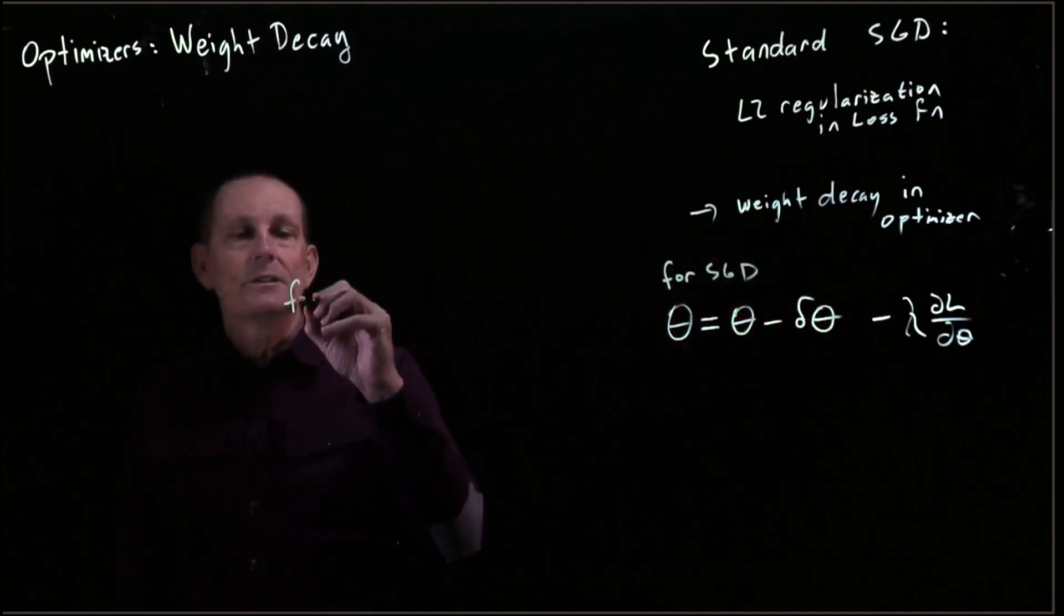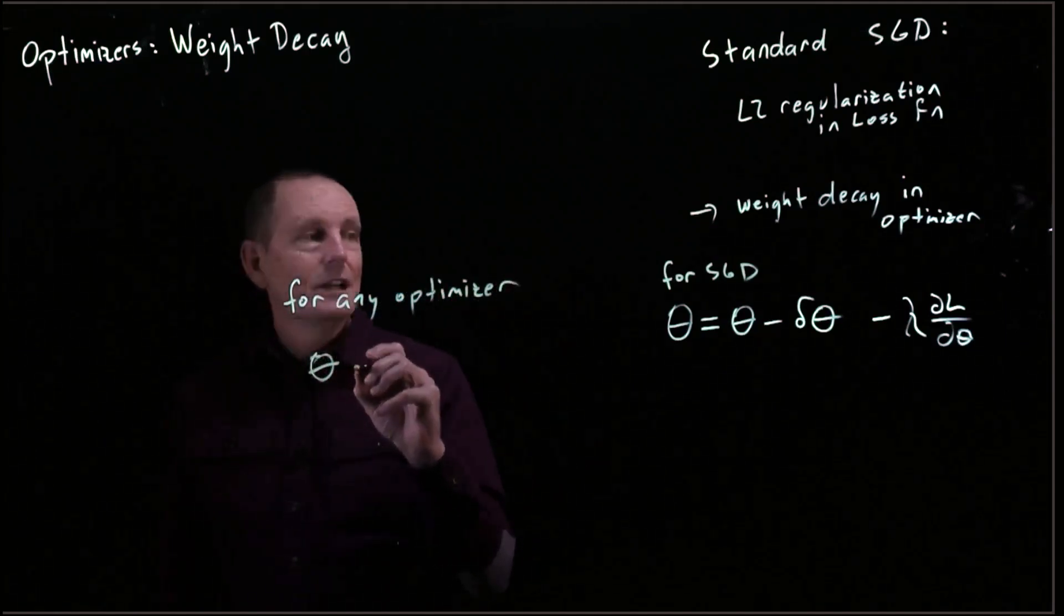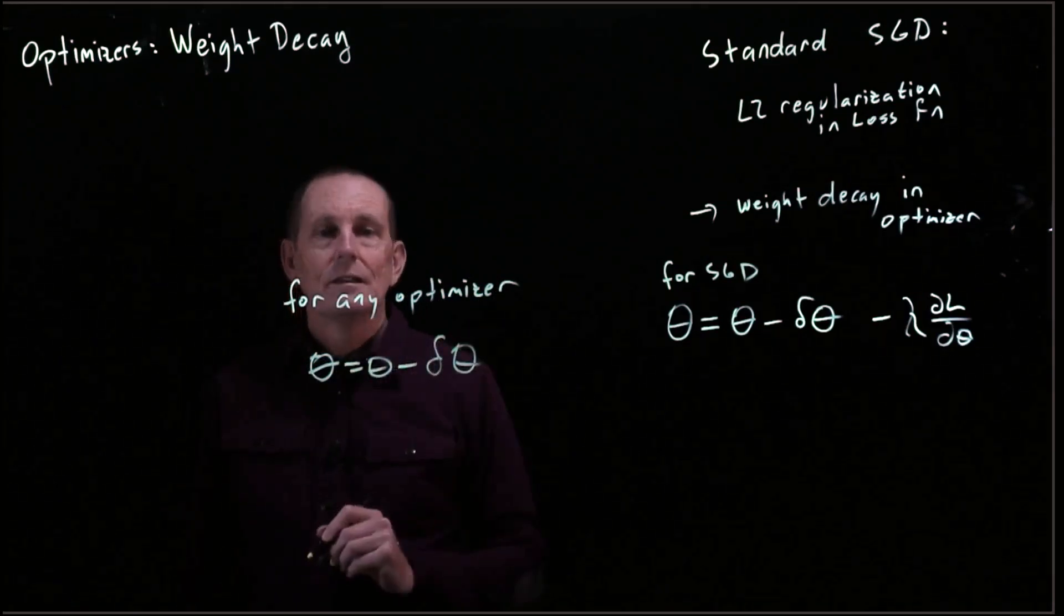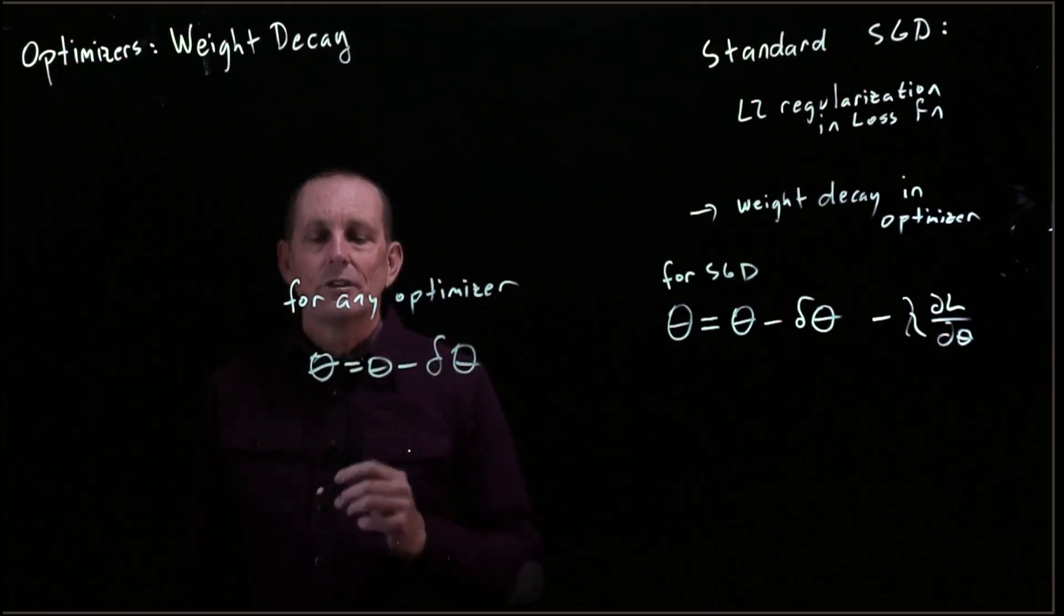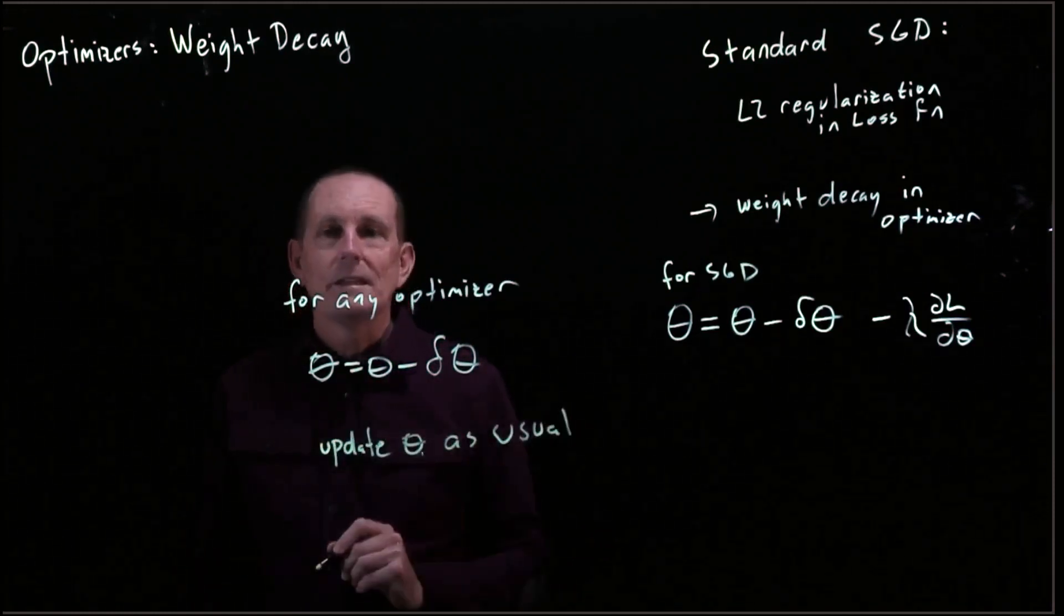For any optimizer, we can do something like this: first, take theta equals theta minus the percentage of theta we want to get rid of, and then update theta as usual.